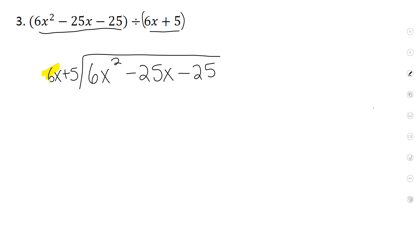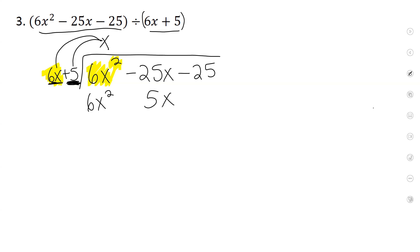6x times what will give you 6x squared? 6x, right — all this is missing is an x. So if we multiply, 6x times x is 6x squared. We have another item over here, so we have to multiply that too: 5 times x is 5x. Now let's change the sign. This will be a minus and a minus. 6 minus 6, that's just 0. Negative 25 minus 5, that's negative 30. Let's bring that x along.